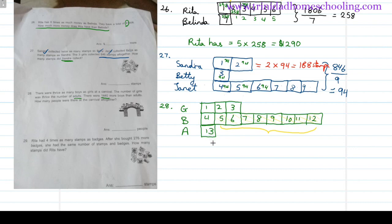Counting the parts that represent the difference of boys over adults, we get eight parts out of 13 parts total at the carnival. So eight parts out of 13 parts equals 1440.